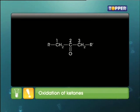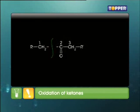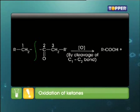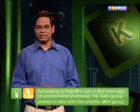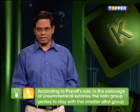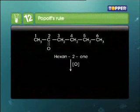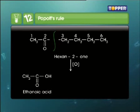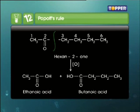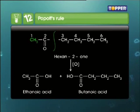On the other hand, ketones undergo cleavage of carbon-carbon bonds on oxidation. A mixture of carboxylic acids is formed, each of which has fewer carbon atoms than the parent ketone. In case of cleavage of unsymmetrical ketones, Popoff's rule is followed. According to this rule, the keto group prefers to stay with the smaller alkyl group. For example, the oxidation of hexane-2-one forms ethanoic acid and butanoic acid. Here, the keto group stays with the methyl group and not the butyl group.